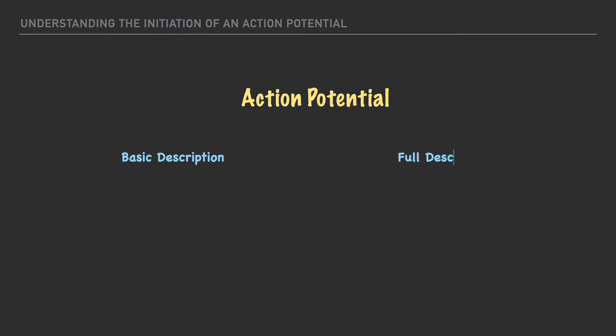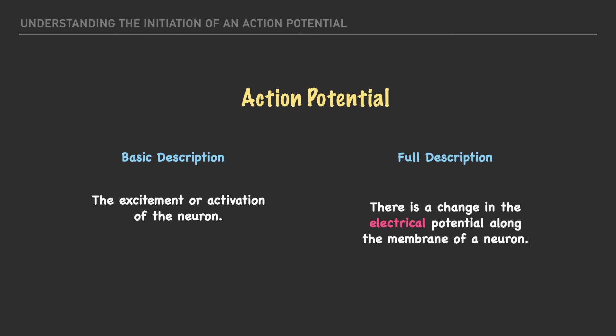So starting with the basic description an action potential is the excitement or the activation of a neuron but for a more well-rounded description we need to describe it as a change in the electrical potential along the membrane of a neuron.